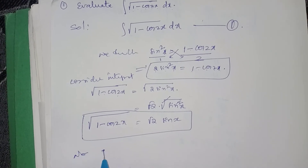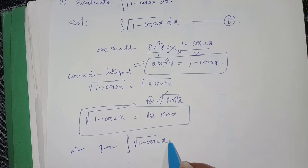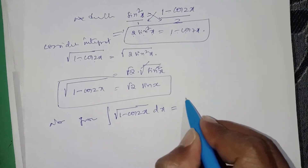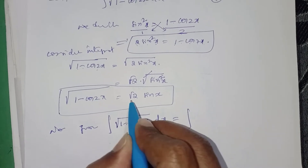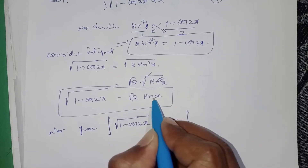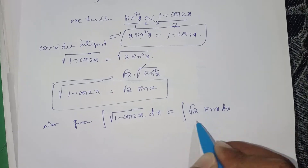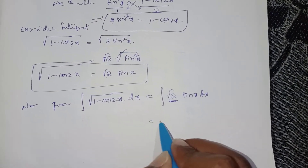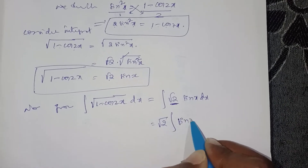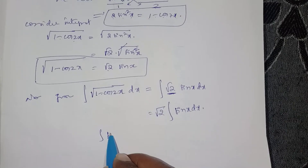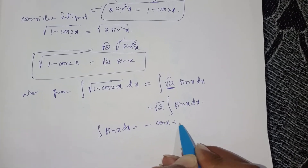From equation 1, the integral of √(1 - cos2x) dx equals the integral of √2 · sinx dx. Since √2 is a constant, take it outside: √2 · ∫sinx dx. The integral of sinx dx is -cosx + C.